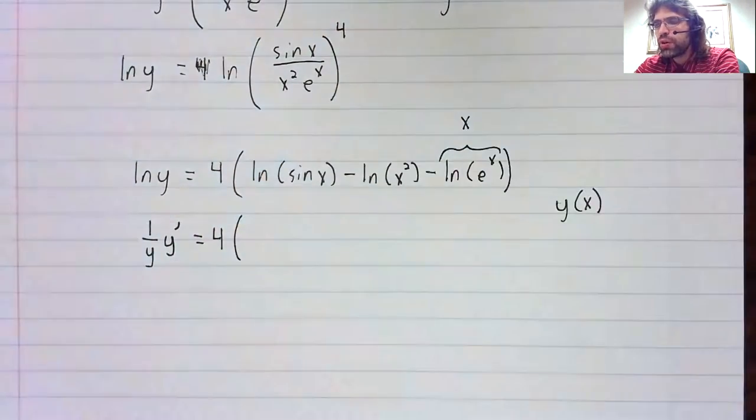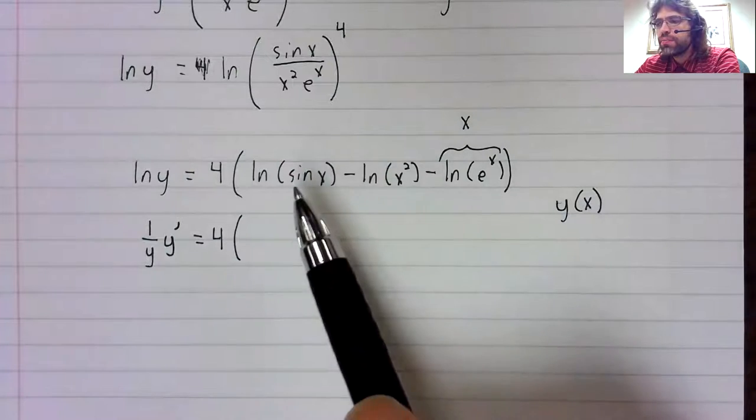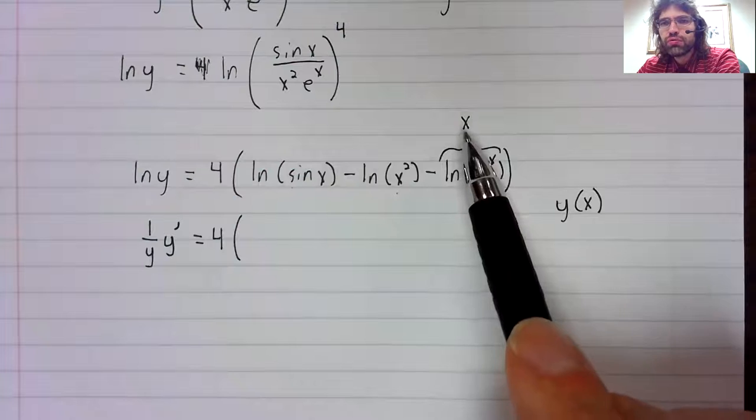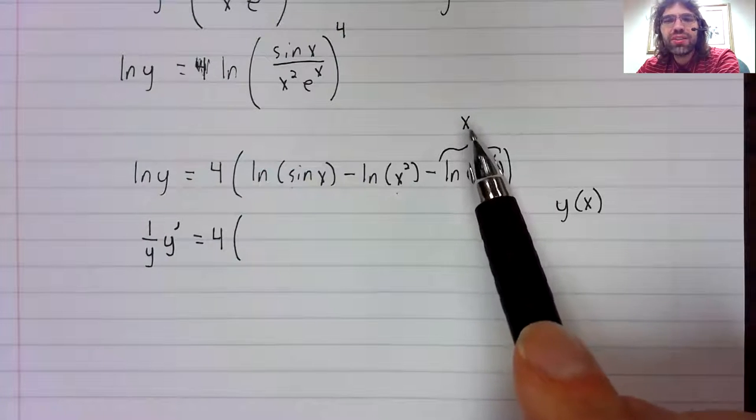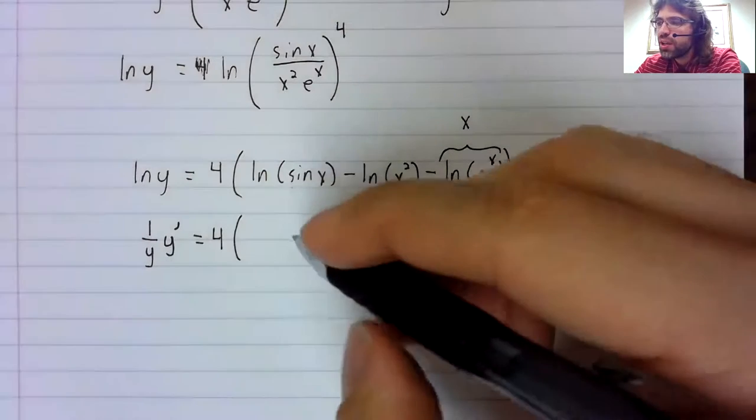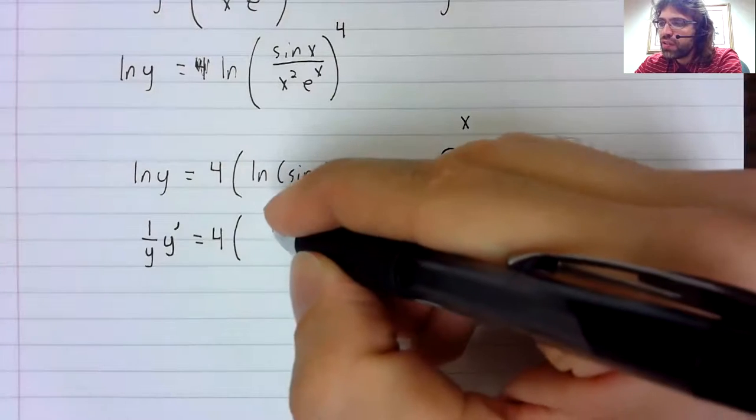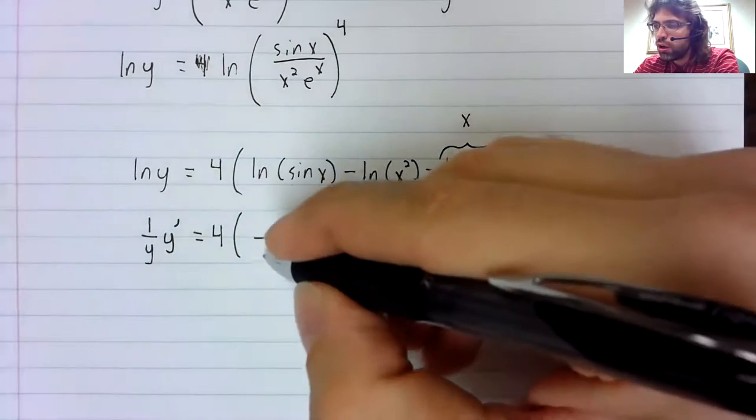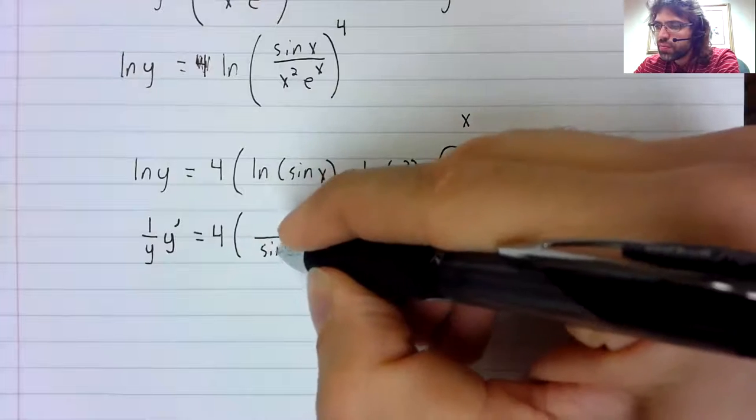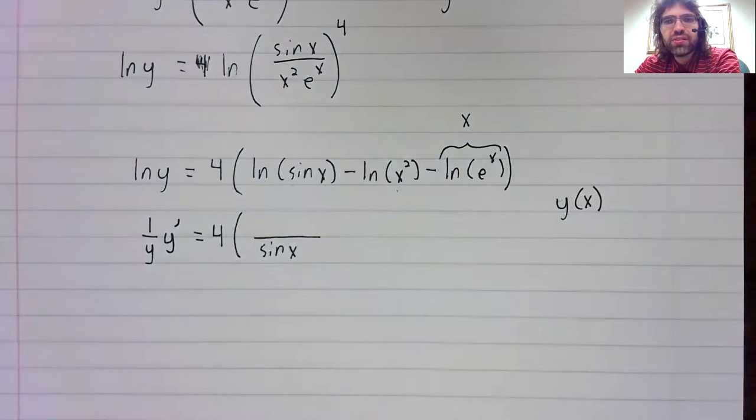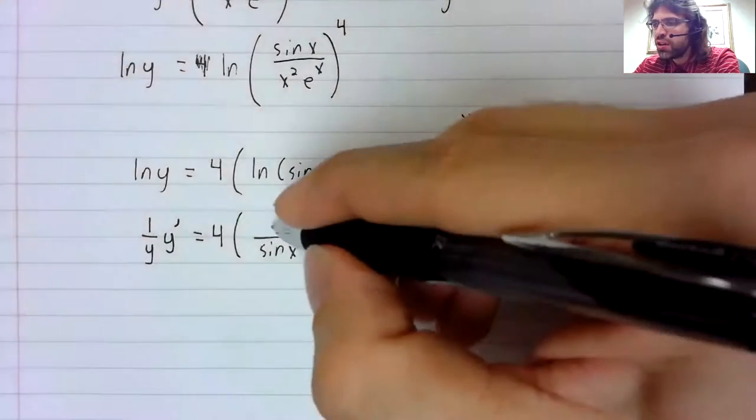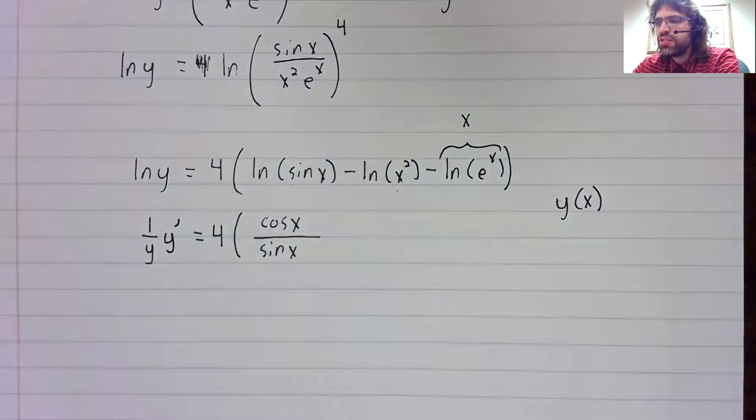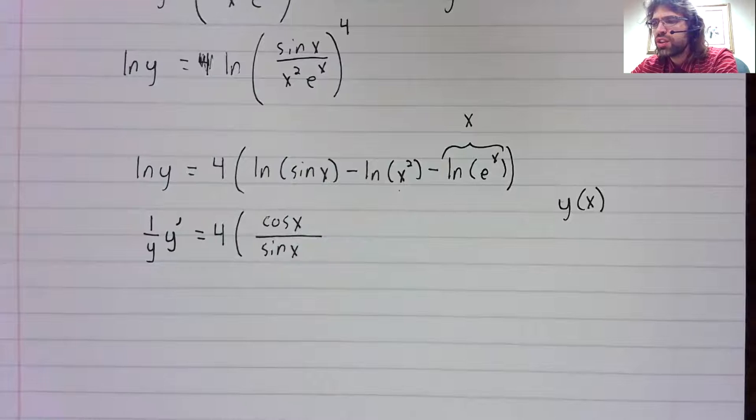And over here, chain rule, chain rule, no chain rule just because this simplified to x. The derivative of the outside function times the derivative of the natural log gives you a sine in the denominator. The derivative of the inside function is the cosine.